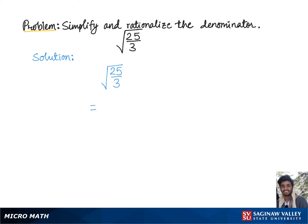So 25 can be written as 5 times 5. And to make the denominator 3 a perfect square, we will multiply both the top and bottom of the fraction by 3.